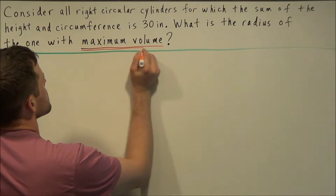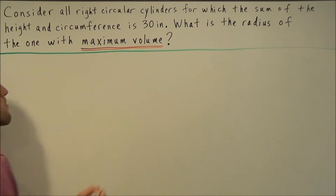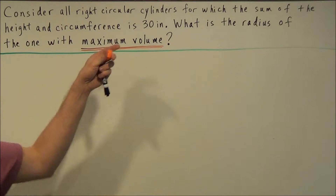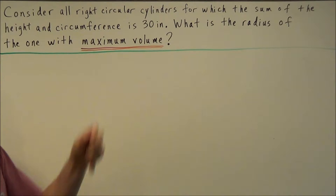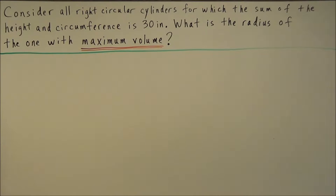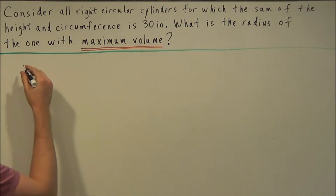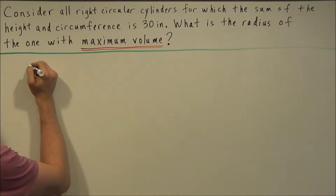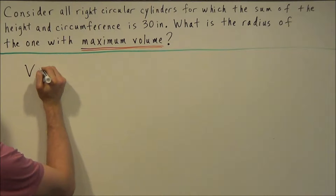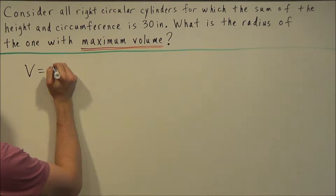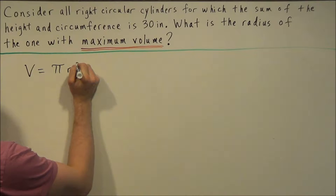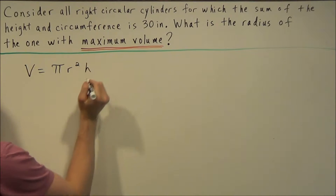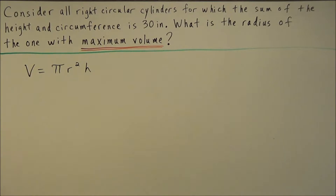This line here is probably one of the most important lines in the question. It tells us our primary equation, and in this case our primary equation is volume equals π r squared times h.